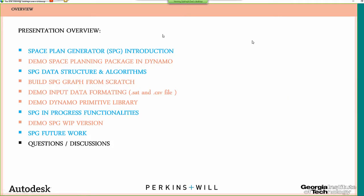The main points I'll cover: first, a brief introduction to what Space Plan Generator means and how to access the package in Dynamo. Then I'll talk about SPG's data structure and algorithms. I'll build the SPG graph from scratch so you understand how different nodes and components work. Then I'll demo how to input data — from a .sat and .csv file, essentially the site outline and program document. I'll also demo the Dynamo Primitives Library written by Colin McCrone from Autodesk's Generative Design team, which Space Plan Generator works on top of. Finally, I'll talk about in-progress functionalities not yet pushed to the package manager.